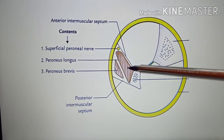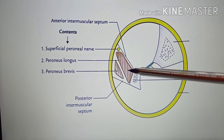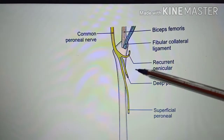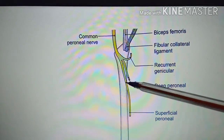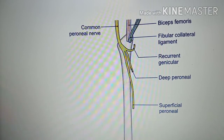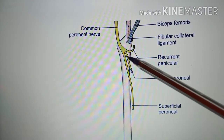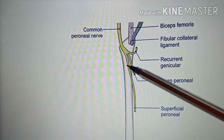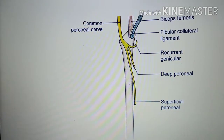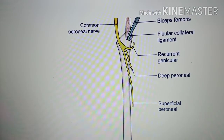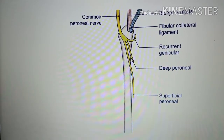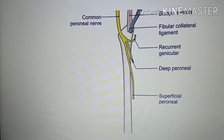The muscles present here are the peroneus longus muscle and the peroneus brevis muscle. The superficial peroneal nerve arises in the substance of the peroneus longus on the lateral side of the neck of the fibula. It then descends for a short distance between the peroneus longus and the peroneus brevis, and then lies in a groove between the peroneus brevis and the extensor digitorum longus.